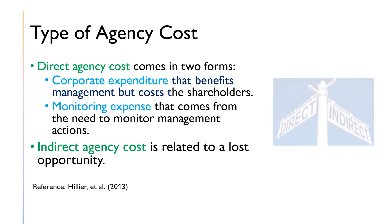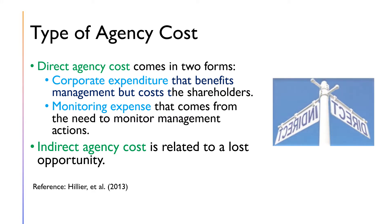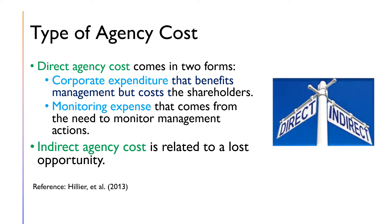In general, agency cost can be direct or indirect. Direct agency cost comes in two forms. The first type is a corporate expenditure that benefits management but costs the shareholders — for example, the purchase of a luxurious and unneeded corporate jet. The second type of direct agency cost is an expense that comes from the need to monitor management actions — for example, paying outside auditors to assess the accuracy of financial statement information. An indirect agency cost is related to a loss of opportunity — for example, risk avoidance by managers. Management may shy away from attractive but risky projects because they worry more about the safety of their jobs than about maximizing shareholder value.